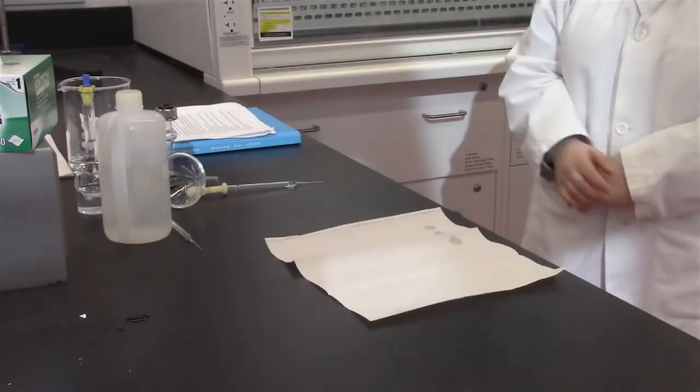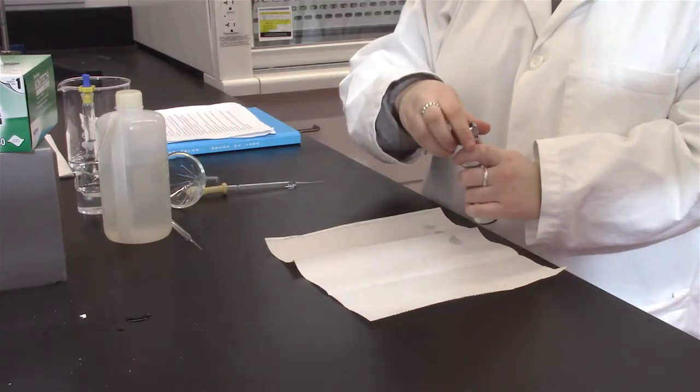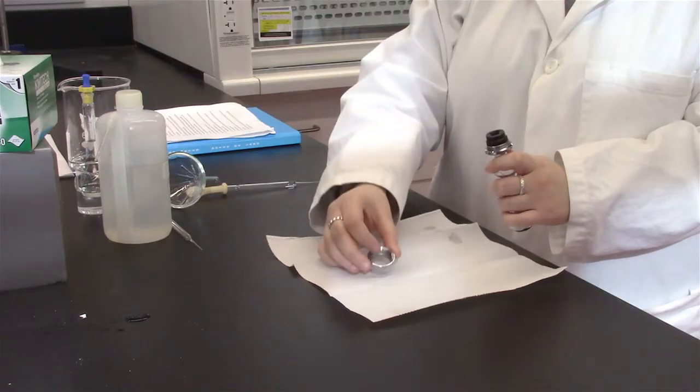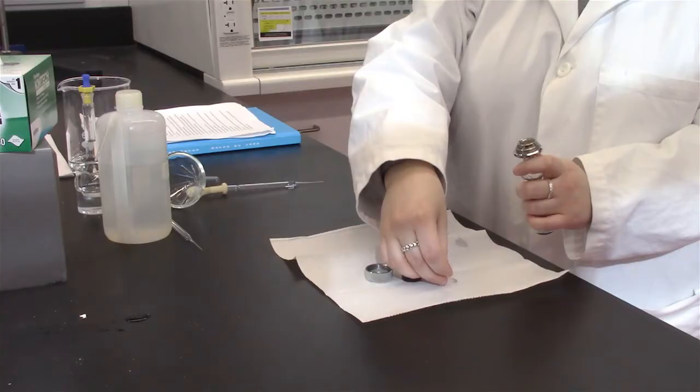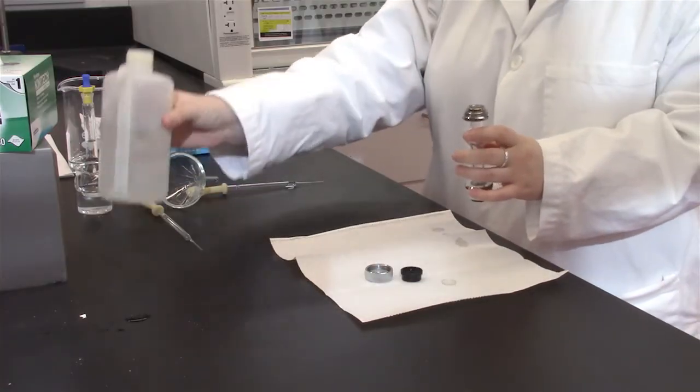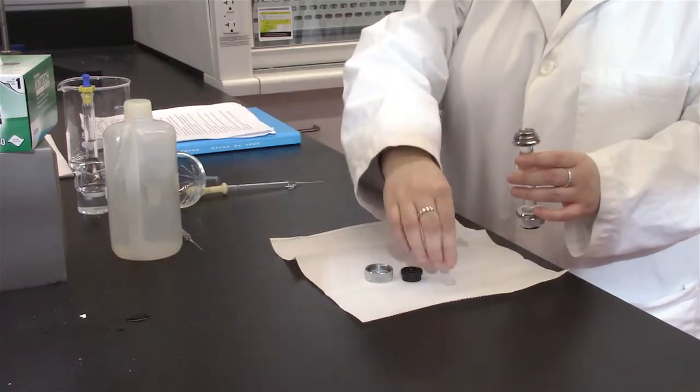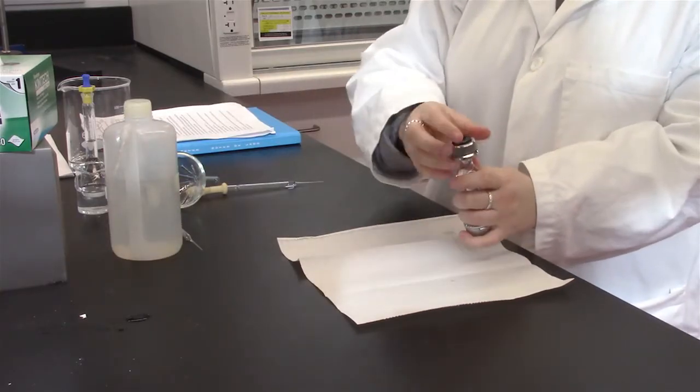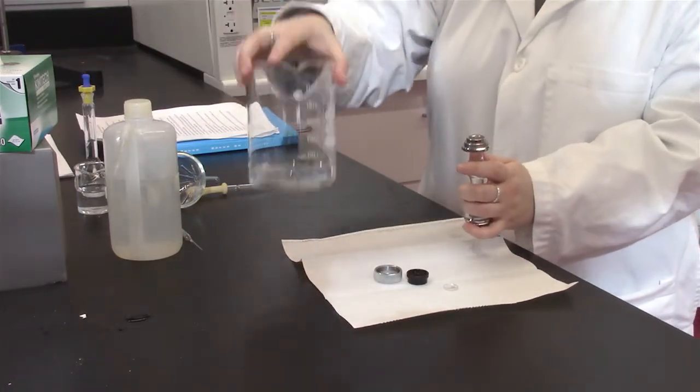Next, ensure that the polarimeter sample holder is clean. Note that there are three sections to the polarimeter sample holder: the silver cap, the black washer, and a clear lens. Be careful not to break the lens. Rinse the sample holder with deionized water and then empty into a waste beaker.